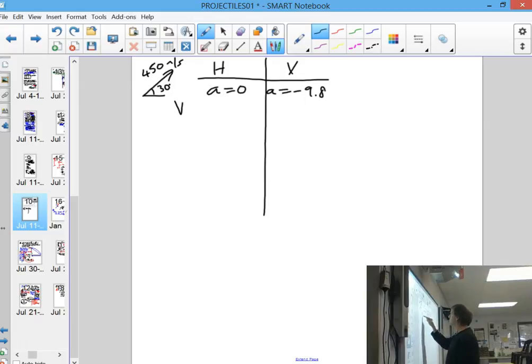And we can always do a equals 0 and a equals minus 9.8. And we need to know the initial velocity. So you'll find on the formula sheet the VH is the V cos theta formula there to find the initial horizontal velocity. So you're going to be putting in 450 cos 30.